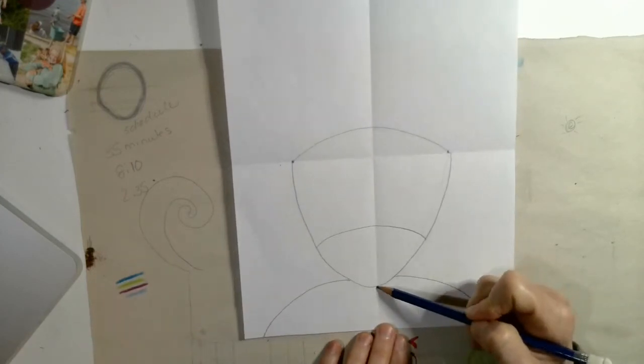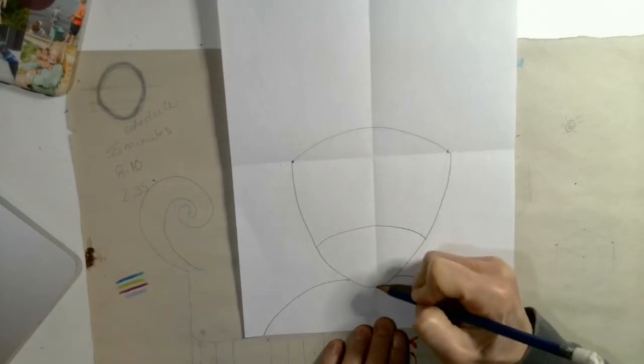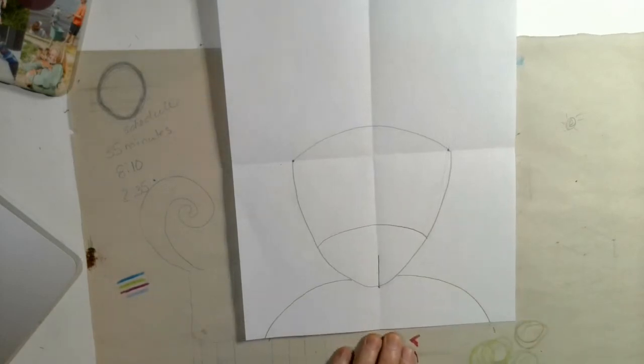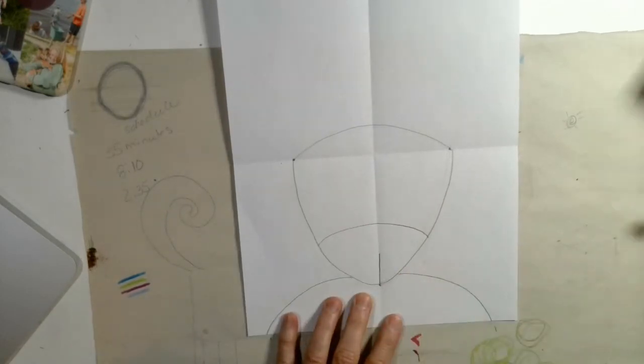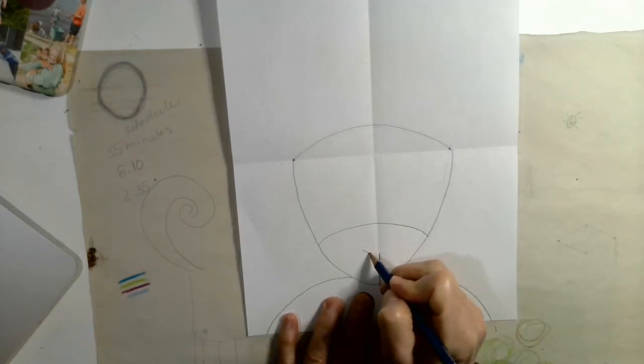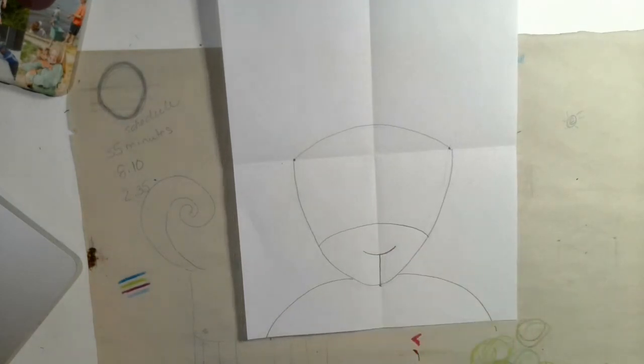Our next step is we're going to go down. Remember where we did this dot? It's right on the fold. We're going to start at that dot and do a straight line that goes part way up. Then on top of that straight line, we're going to make a smile line.